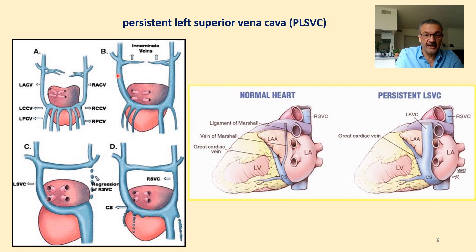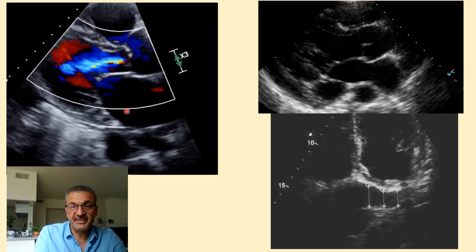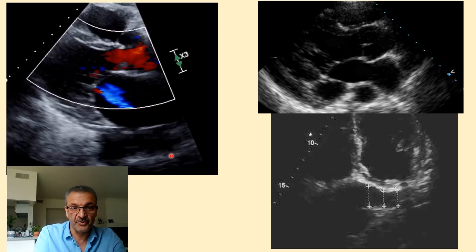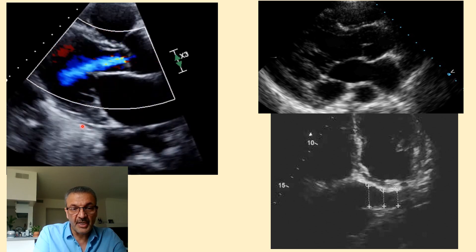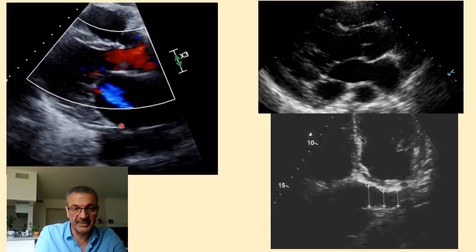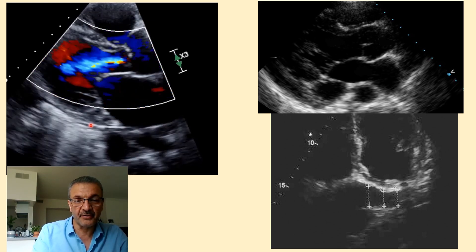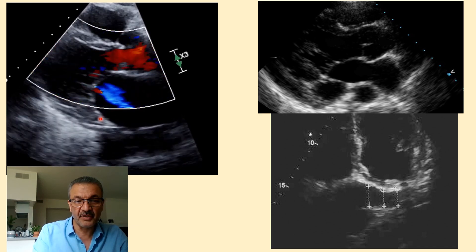So this left superior vena cava joins the coronary sinus and through that drains to the right atrium. Let's see how we detect and diagnose this with bubble test — first, how we visualize the coronary sinus on echo. In a normal situation, the coronary sinus is located at the atrioventricular junction. The atrioventricular junction appears as a circular shape. The coronary sinus is a circular hypo- or anechoic structure, anterior to the pericardium. Here is our pericardium, and this small circular anechoic structure is the coronary sinus.